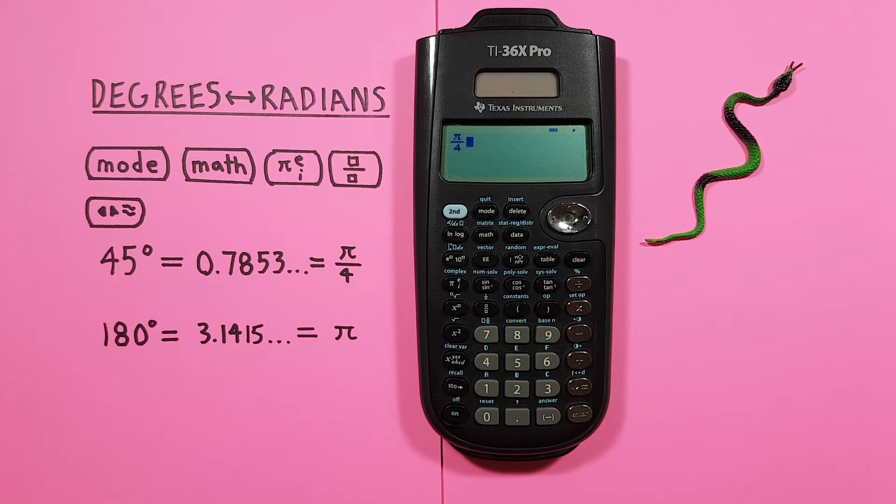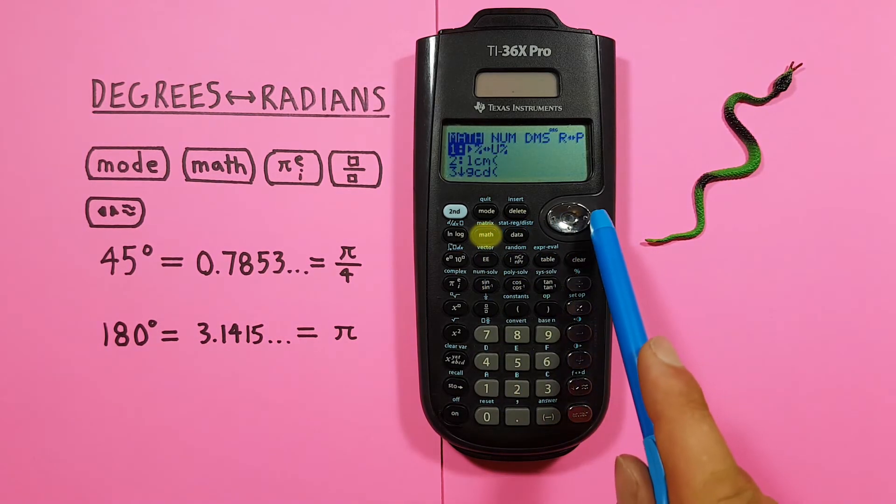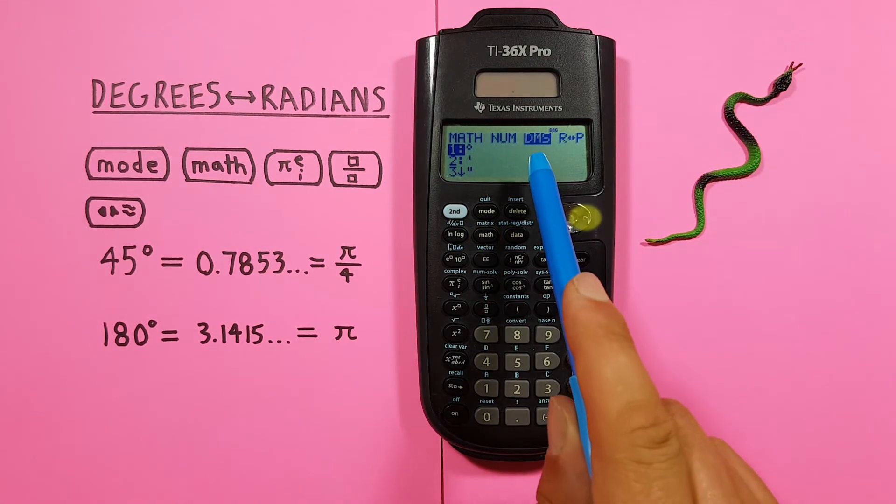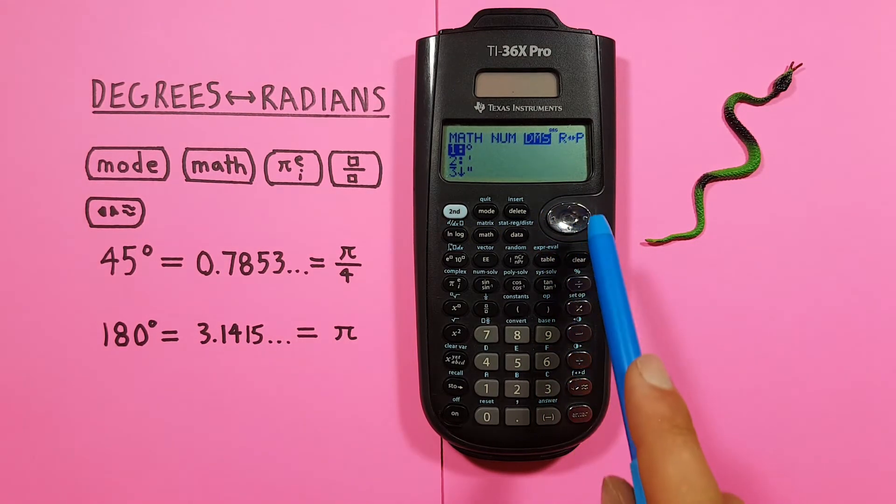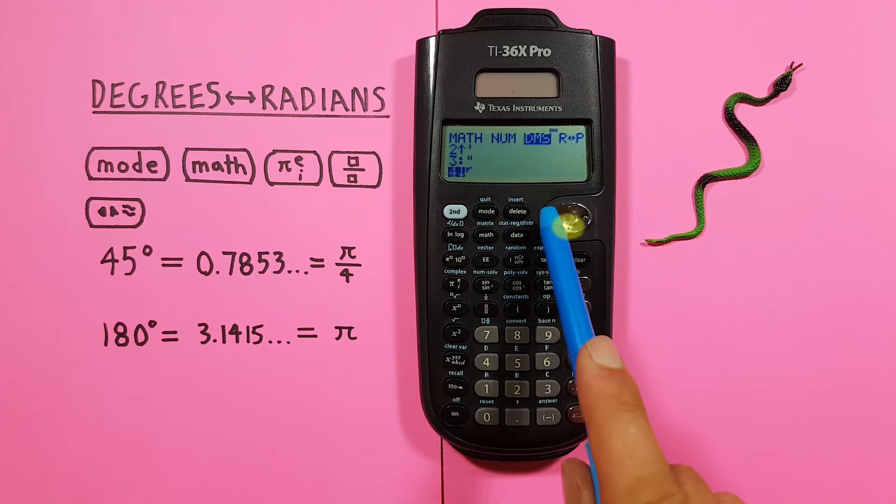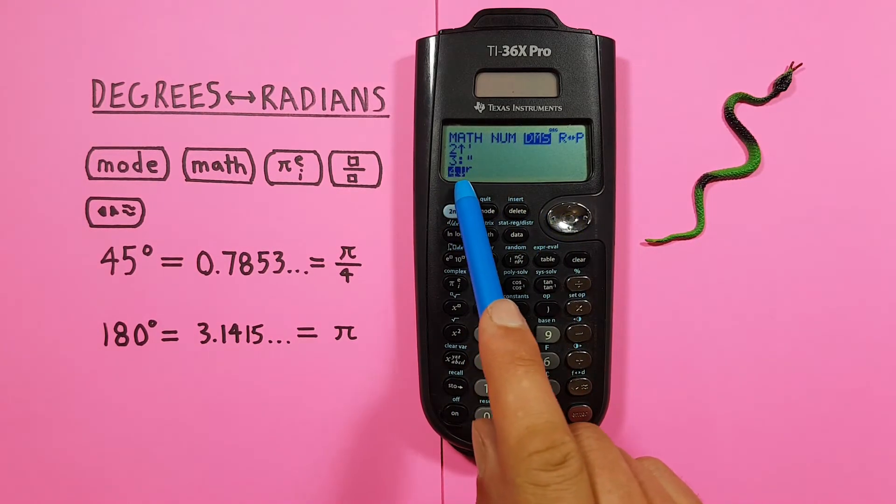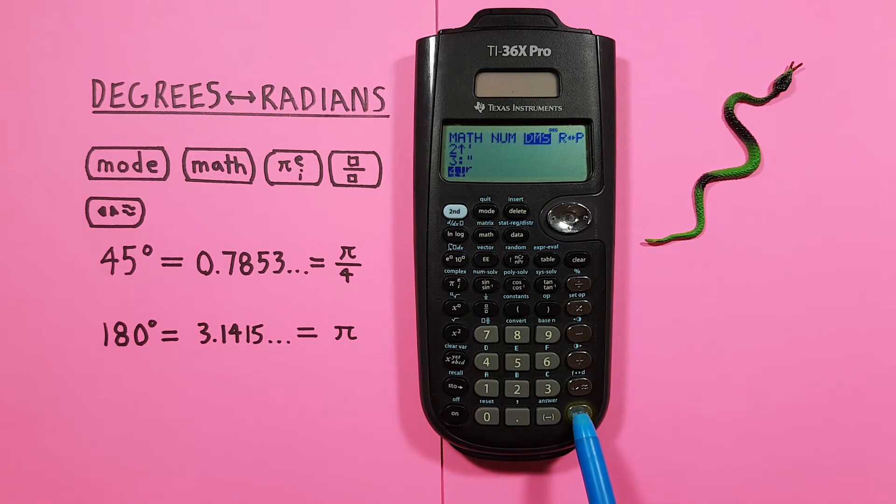Now we need to tell our calculator these are radians. To do that we press the Math key. And scroll across to the DMS menu. And then down to number 4 R for radians. So we press Enter.